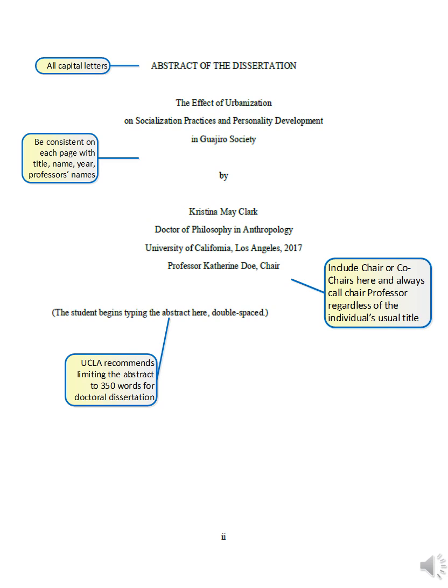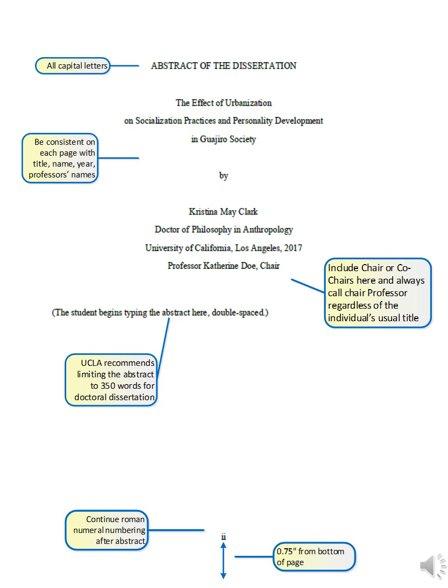UCLA recommends 350 words for doctoral dissertations and 150 words for master's theses. Page numbers will begin on your abstract page with lowercase Roman numeral 2, not 1 or 3, but 2. Page numbers are the only exception to the 1 inch margin rule. Page numbers appear 0.75 inches from the bottom of the page. Your page number will continue from 2 on the abstract throughout your preliminary pages. Arabic numerals begin with 1 on the first page of your body text.